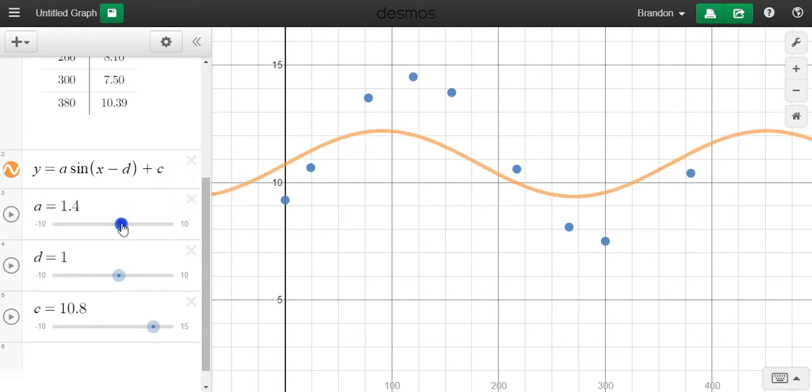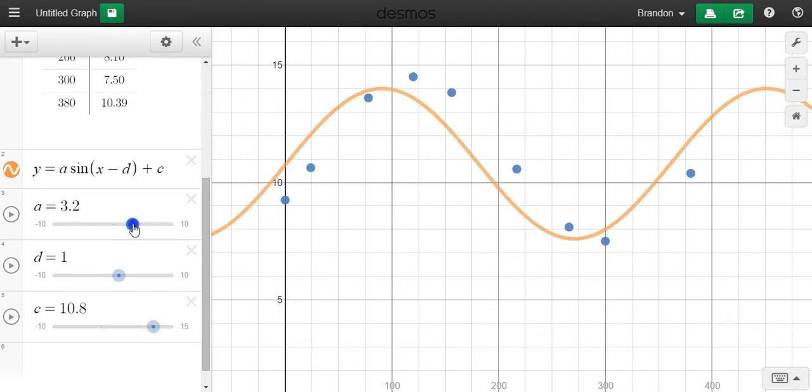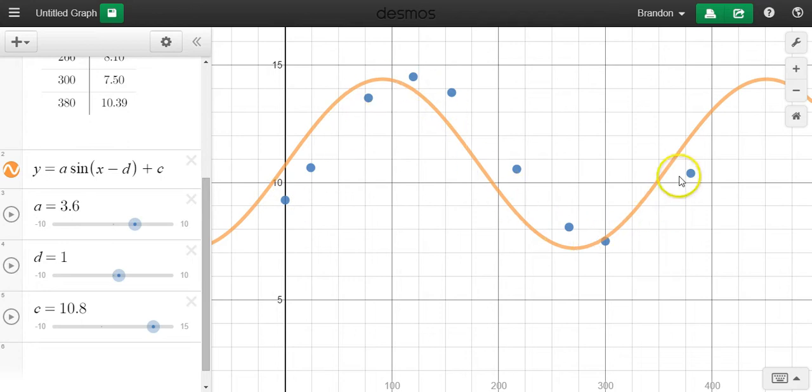And let's change our amplitude. Okay, we're getting pretty close here, but it looks like everything's off a little bit. I'm a little bit to the left of where I want to be. You see all of these points are hitting to the right of my curve. So I need to move my curve to the right.